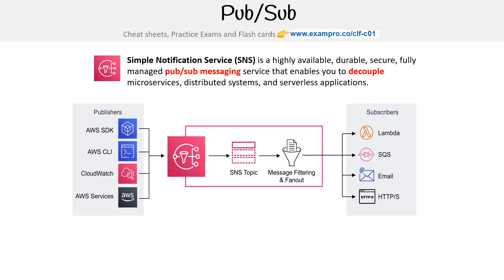Here we have a variety of publishers like the SDK, the CLI, CloudWatch, and other AWS services. You'll have your SNS topic, you can filter things, fan them out, and then you have your subscribers — Lambda, SQS, emails, HTTPS. It looks very similar to streaming, but there's not a lot of communication going back — it's just publishers and subscribers. It's a very managed service, whereas Kinesis you can do a lot more with.